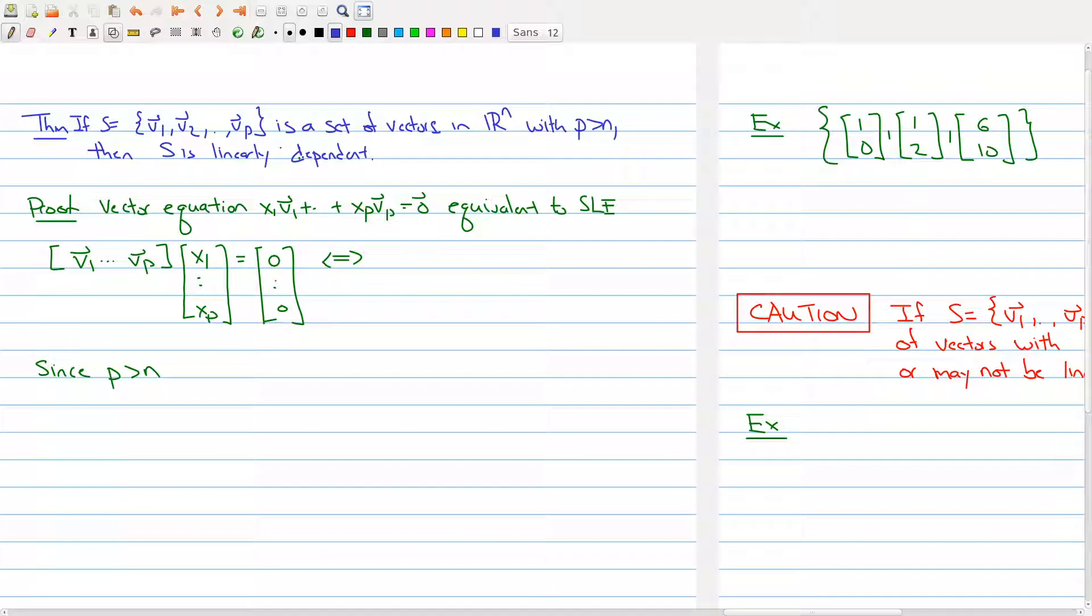So more precisely, we have that we're given a set of p vectors in Rn, where p is just greater than n, the n space that we're dealing with. And the theorem says that without even looking at the set of vectors, I can immediately claim that this set of vectors is linearly dependent. Now, why is this true?